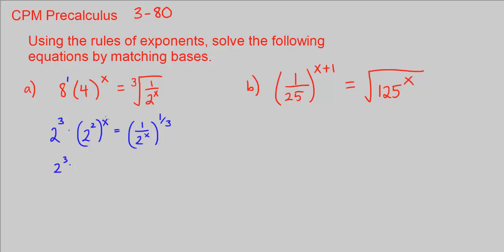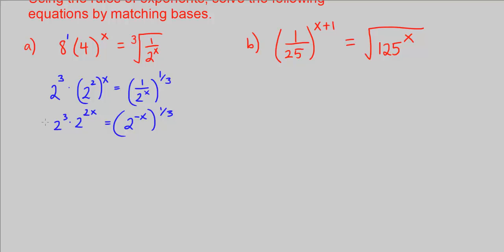2 cubed times 2 squared to the x power is the same as 2 to the 2x power — you multiply these. Now I'm going to bring this up to the numerator by making the exponent negative, so it's going to become negative x to the 1 third power. Base 2 to the power of 3 times base 2 to the power of 2x — same base means we can combine that into one and add the exponents.